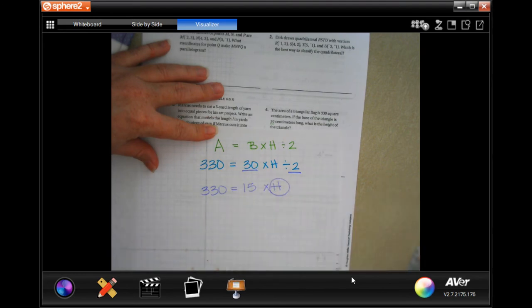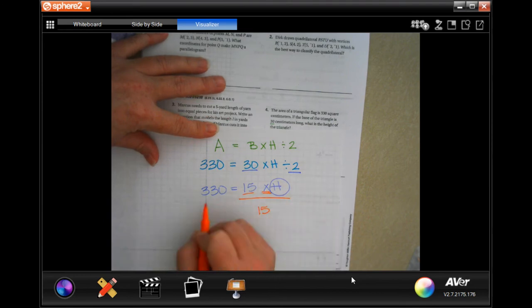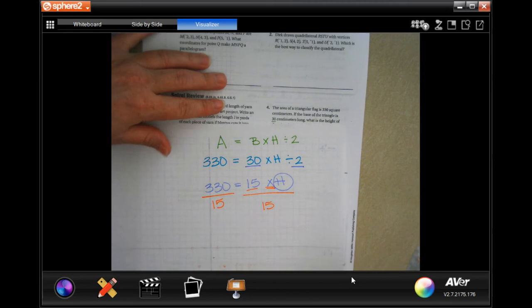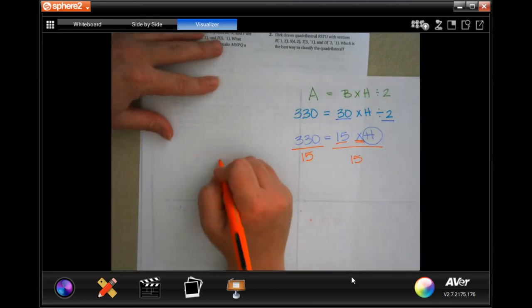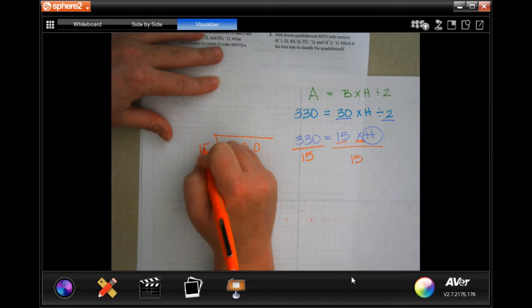And I want to get h alone. Well, in order to get h alone, I need to do the opposite of the sign, which is divide. And I need to do the number that's with that, which is 15. So now I need to come over to this side. Because whatever I do to this side of the equal sign, I have to do to this side. Okay? So now I have 230 divided by 15. Let's do it. Okay?